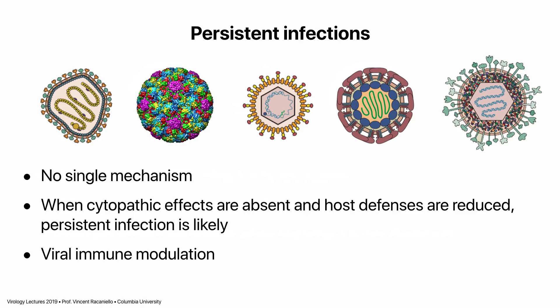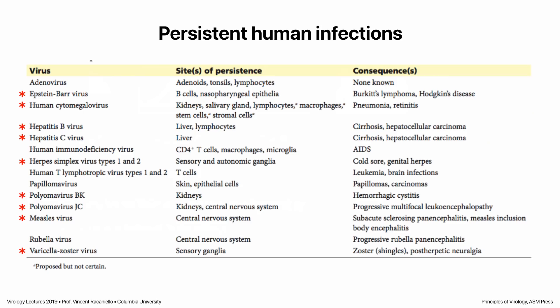Non-cytopathic viruses don't induce good immune responses because you don't get inflammation and you don't get a good adaptive response. So at the onset of a persistent infection: reduced cytopathic effects, reduced host defenses. But in many persistent infections, we also have modulation of host defenses — antagonism of specific host defenses — that results in the infection not being cleared.